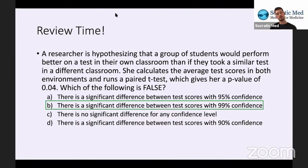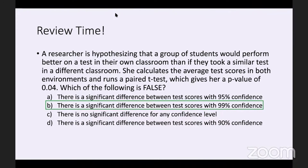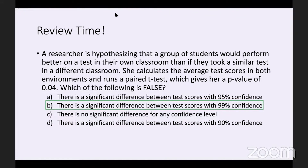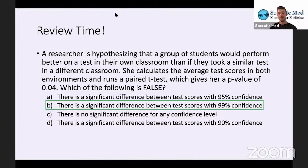A student asks about option A. The confidence level is just given so you can get your alpha — one minus confidence equals alpha. Because we have 95% confidence, alpha is 0.05. We compare P to that and see that P is less, so there is a significant difference between the test scores. But the question asks which of the following is false, so A is not the correct answer because it's a true statement.